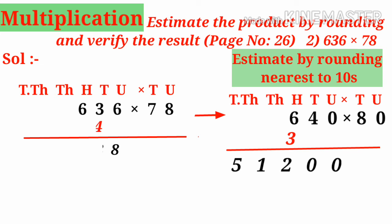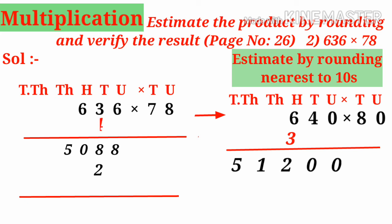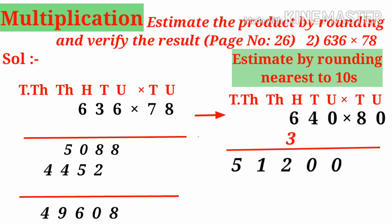Doing the actual multiplication: 8 × 6 is 48, write 8 carry 4; 8 × 3 is 24 plus 4 is 28, write 2 carry 2; 8 × 6 is 48 plus 2 is 50 — giving 5088 for the units row. For the tens row: 7 × 6 is 42, write 2 carry 4; 7 × 3 is 21 plus 4 is 25, write 5 carry 2; 7 × 6 is 42 plus 2 is 44 — giving 4452 shifted one place. Adding the rows: units 8, tens 0 carry 1, hundreds gives 5 plus 1 is 6, then 9, and last 4 — total is 49608. The difference between the estimated value 51200 and actual value 49608 is approximately 1592, so it is a good estimation.